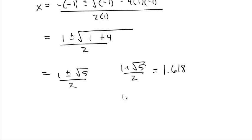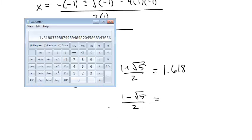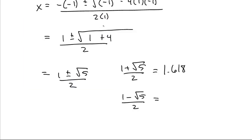And 1 minus the square root of 5 over 2 is square root of 5, make that negative, add 1, divided by 2, negative 0.618.